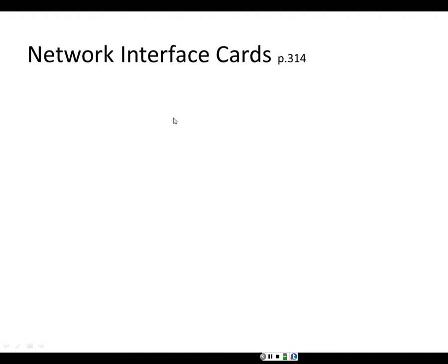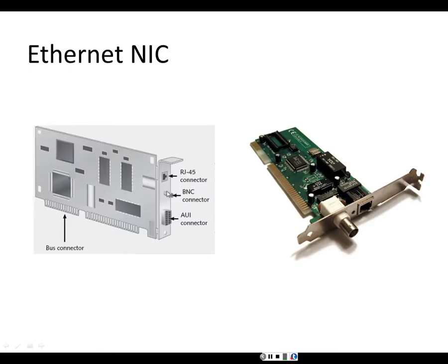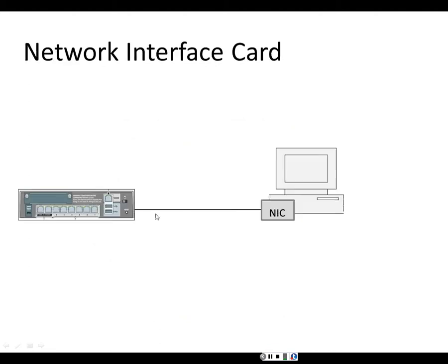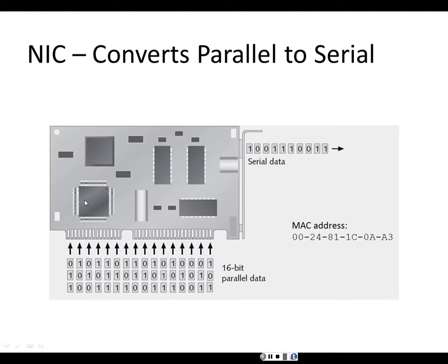Now let's talk about network interface cards on page 314, covering purpose, types, and network interface card installation. A network interface card is a circuit board with a port in the back to plug an Ethernet cable into, and it typically plugs into a slot in the motherboard. A cable then connects from the network interface card to the switch. A network interface card converts a parallel signal to a serial signal.